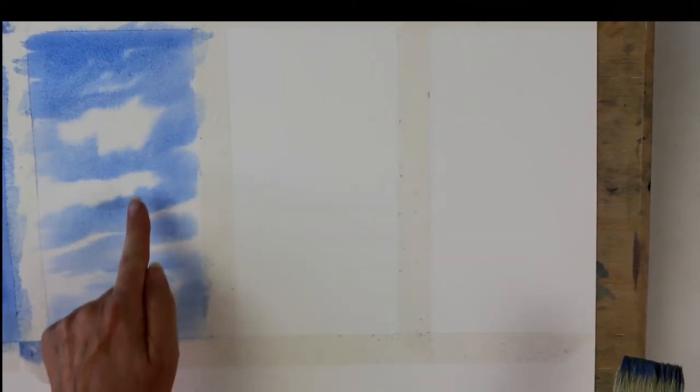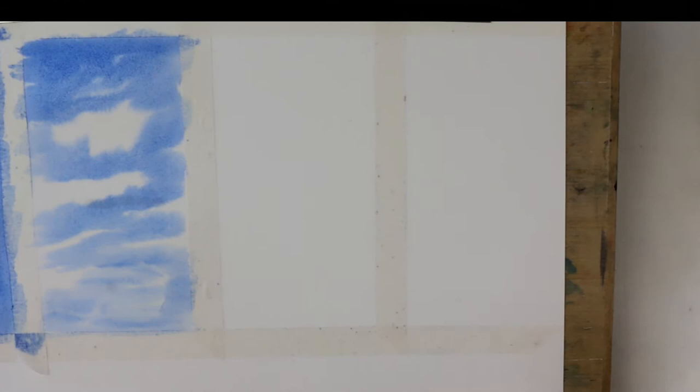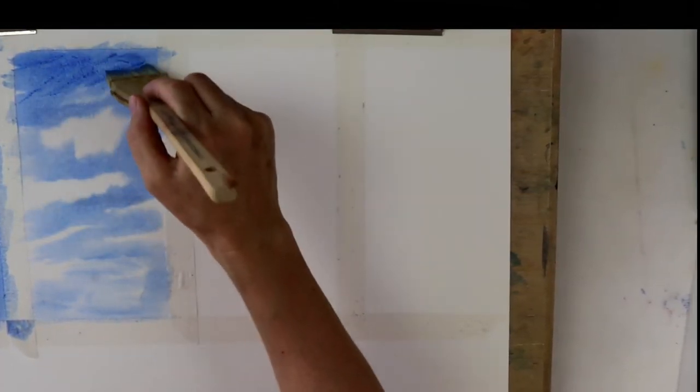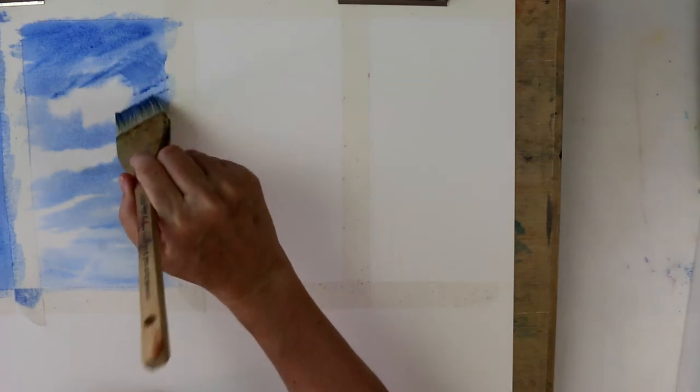This time I'm going to go in with my blue and paint around where I want my clouds, leaving areas where I want the clouds to be. Remember, when you're going towards the horizon, clouds will be closer together because they're further away. Now how easy is that? This is what we call negative painting. You paint around the object and leave the object as white paper. While my paper is still wet, I could come back in again and make some areas a little bit darker if I wanted to.